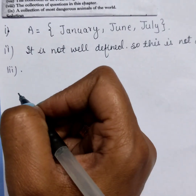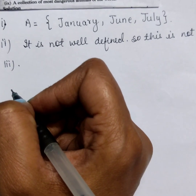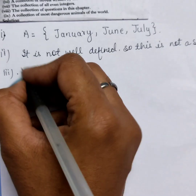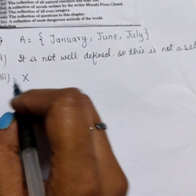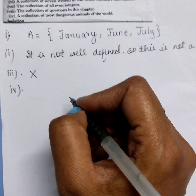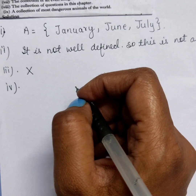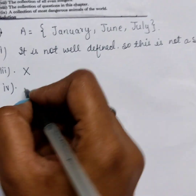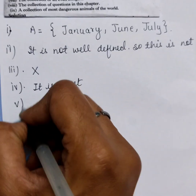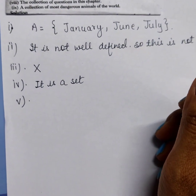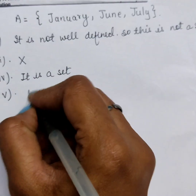A team of 11 best cricket batsmen of the world is also not a set because the collection is not well-defined. The fourth question: the collection of all the boys in your class — this is a set because it is well-defined. The fifth one: the collection of all natural numbers less than 100, starting from 1 up to 99 — this is a set.